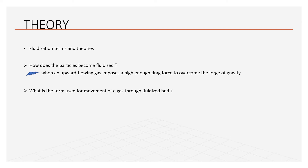The second term is: what is the movement of gas through a fluidized bed? This can be described using the two-phase theory. This figure shows the movement of gases through the particle bed. According to this theory, gas moves through the bed in two ways: first as bubbles, and second as part of an emulsion, as shown in the diagram.